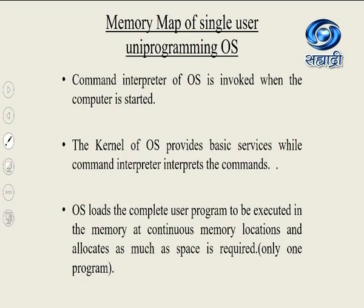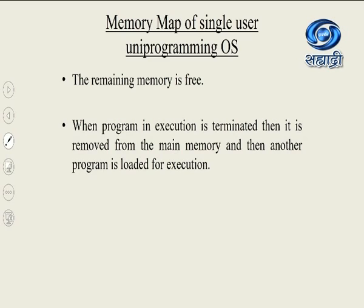Then the OS loads the complete user program to be executed in the memory at continuous memory locations and allocates as much space as is required. Only one program is loaded in the memory and the remaining memory is free or wasted. When the program execution is terminated, it is removed from the main memory and then another program is loaded. Uniprogramming operating systems are not used nowadays because the CPU time is wasted — it can run only one program at a time.